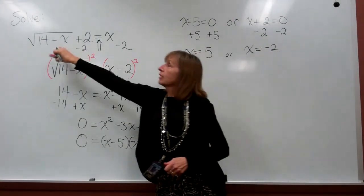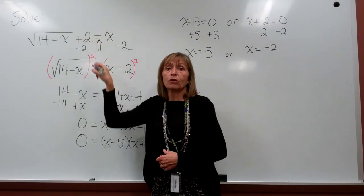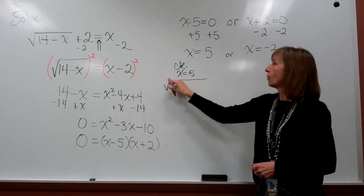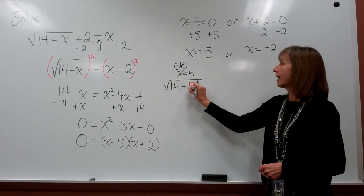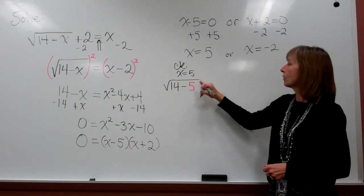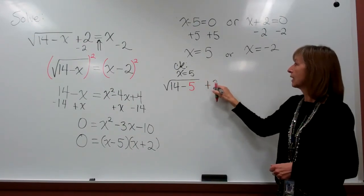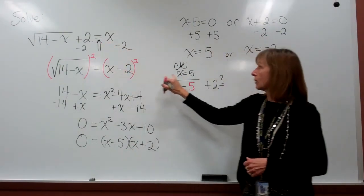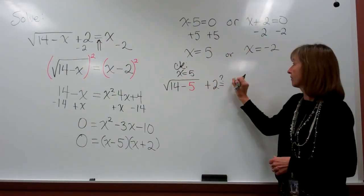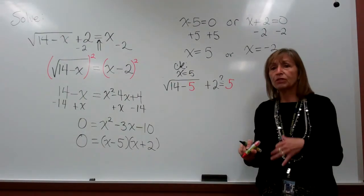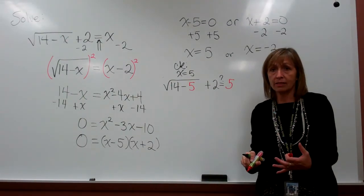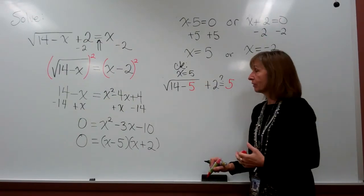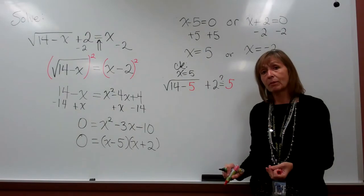We're going to go to the original equation, and anywhere there's an x, we're going to take it out and put 5 in instead. So, we have the square root of 14 minus 5, and then after the end of the square root, we've got a plus 2, and we want to know if that'll come out the same as 5. We don't want to go through the solving process to check this. We've got numbers everywhere. So, we want to follow our order of operations to simplify each of these sides, and then see if they come out to be the same.